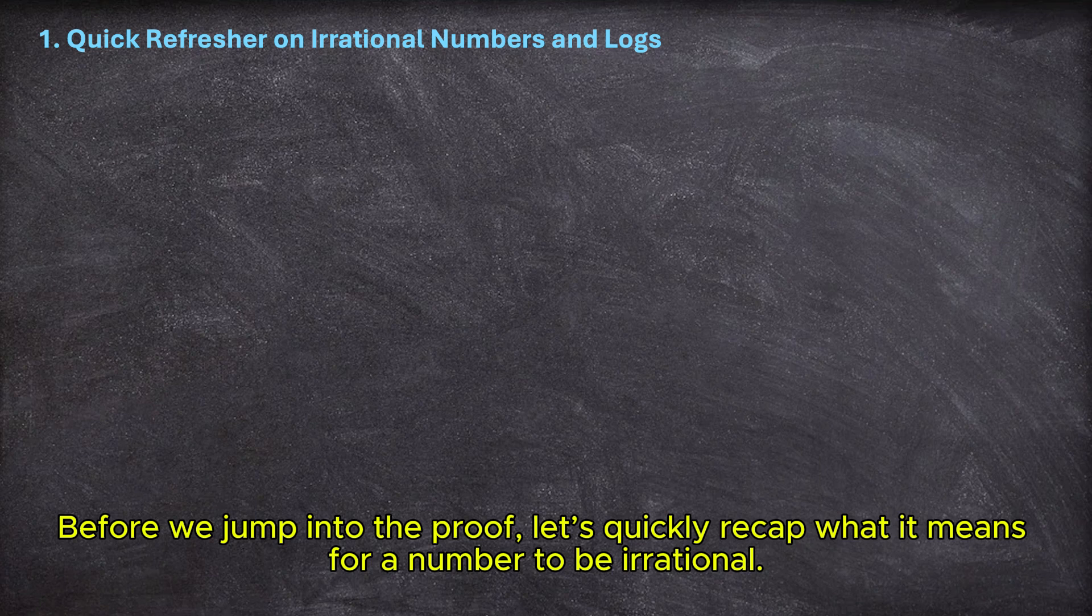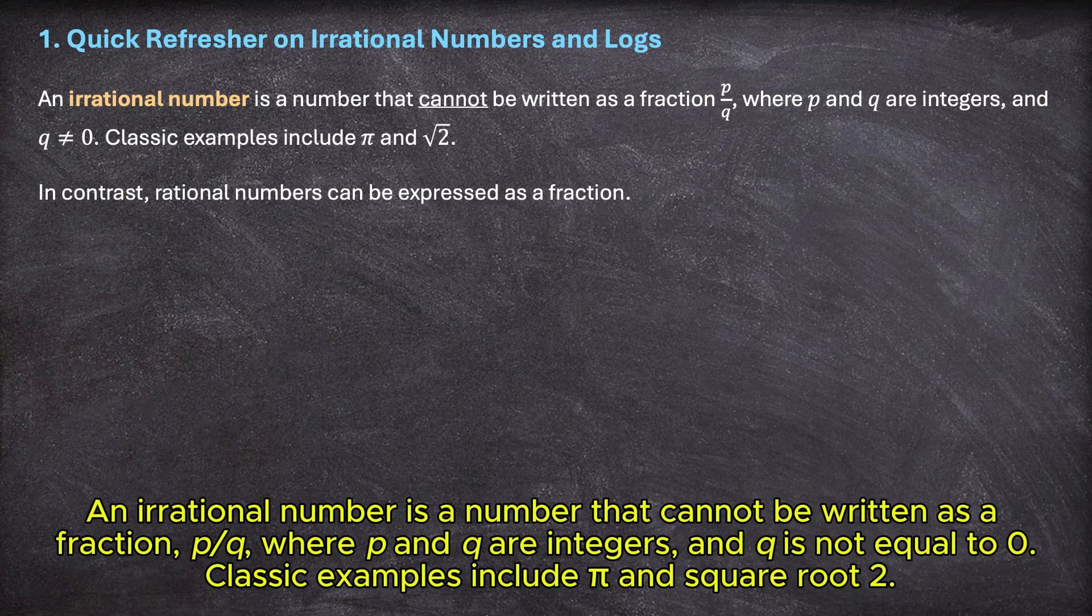Before we jump into the proof, let's quickly recap what it means for a number to be irrational. An irrational number is a number that cannot be written as a fraction, p over q, where p and q are integers, and q is not equal to zero. Classic examples include pi and square root 2.